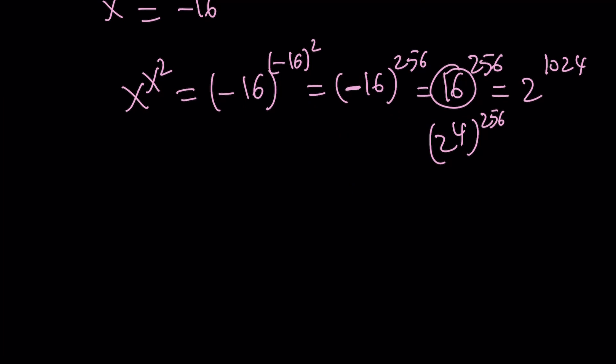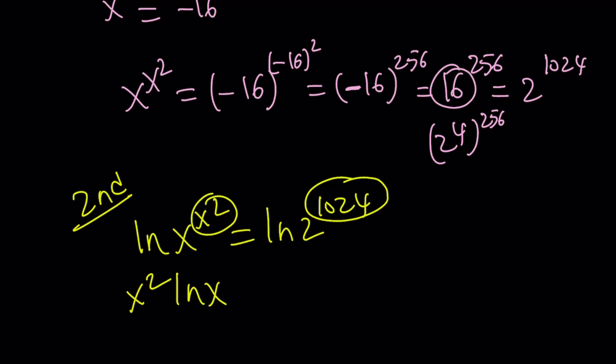So we could also approach this problem a little differently by using ln. I don't know if we're going to call it a second approach, but let's just take a look. We could ln both sides and then get the following. Bring this down, bring this down. X squared ln x equals 1024 ln 2.